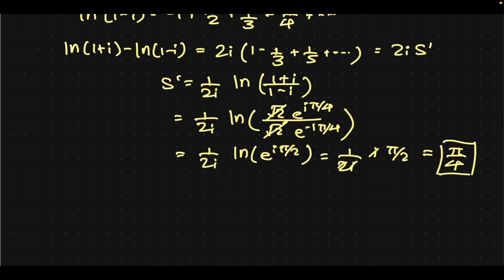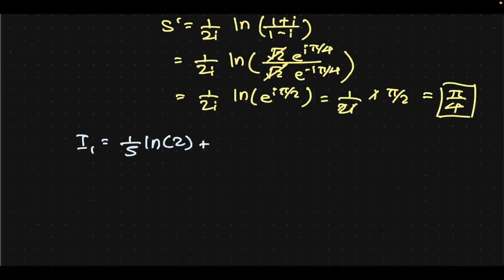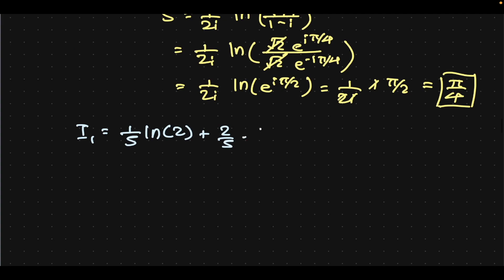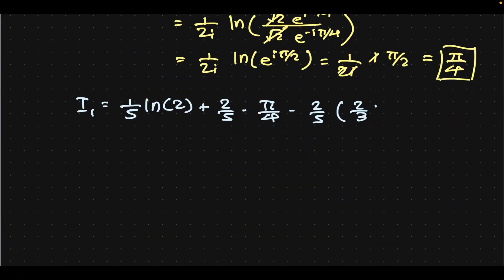Of course you can also do this using the inverse tangent function. So S prime equals pi over 4. We can now return to what our I1 was: 1 fifth natural log of 2, plus 2 over 5 times pi over 4, minus 2 over 5 times the subtracted terms 1 minus 1 third plus 1 fifth. This simplifies to 1 fifth natural log of 2 plus pi over 10 minus 26 over 75.